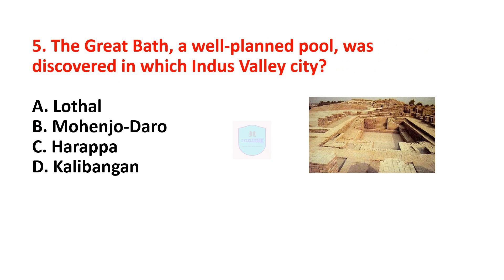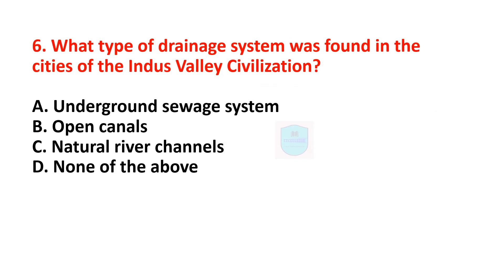Next question: the Great Bath, a well-planned pool, was discovered in which Indus Valley city? Correct answer is Mohenjo-daro. In Mohenjo-daro the Great Bath was discovered. Next question: what type of drainage system was found in the cities of the Indus Valley Civilization? Correct answer is underground sewage system. An underground sewage system was found in the cities of the Indus Valley Civilization.